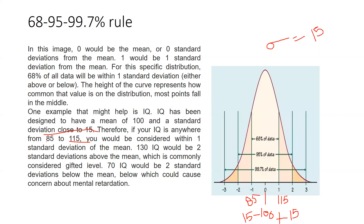An IQ of 130 would be two standard deviations above the mean. Adding 15 again: two standard deviations gives us 130 on the upper side. On the lower side, subtracting two standard deviations gives us 70. So 95% of data falls between 70 and 130. An IQ two standard deviations below the mean — below 70 — could cause concern about mental retardation.